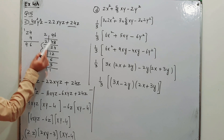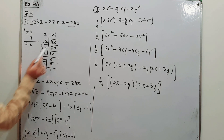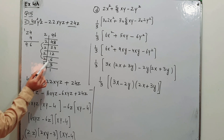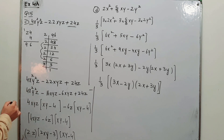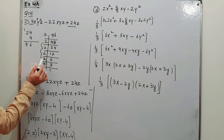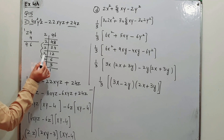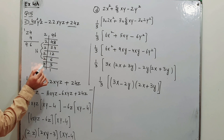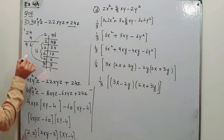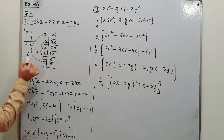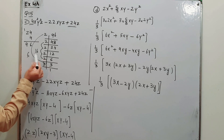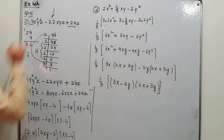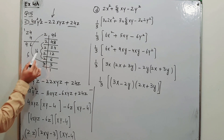Find the prime factors of 96: 96 = 2×48, 2×24, 2×12, 2×6, 2×3 — giving prime factors. Out of these factors, form two pairs: 2×2×2×2 = 16, and 2×3 = 6. So 16 and 6 are the pair of factors.